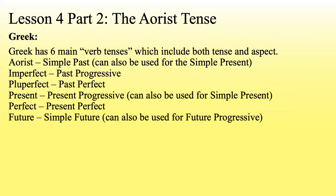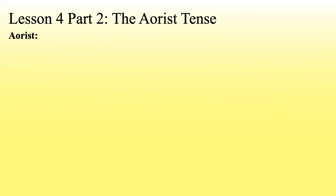Now in Greek, there are six main verb tenses which include both tense and aspect. Aorist is a simple past tense — it can also be used for the simple present, but we won't worry about that. Imperfect, which we've already learned, is a past progressive. Pluperfect is a past perfect. Present is a present progressive tense and can be used for the simple present. Perfect is a present perfect tense. And the future is a simple future, which can also sort of be used for a future progressive.